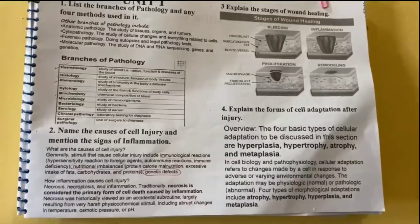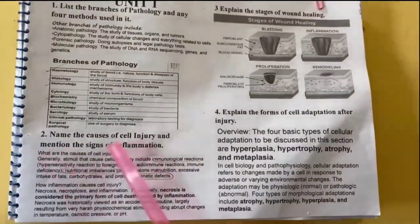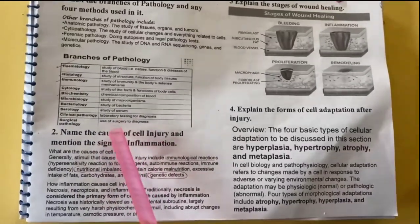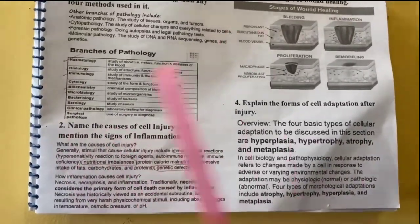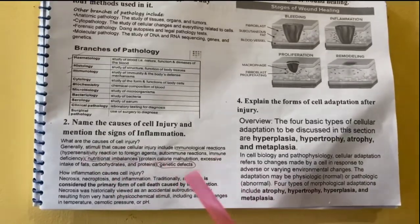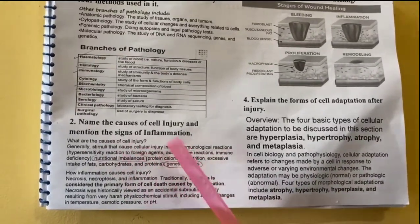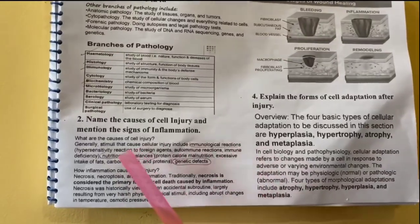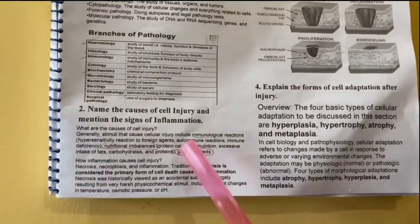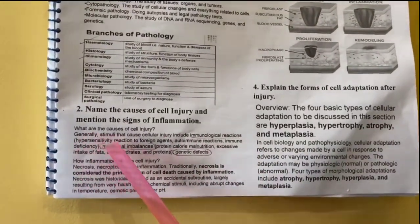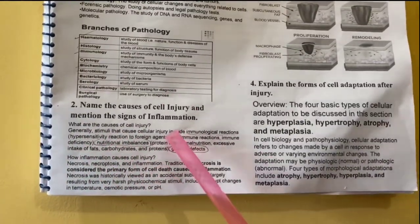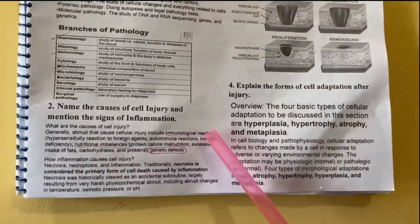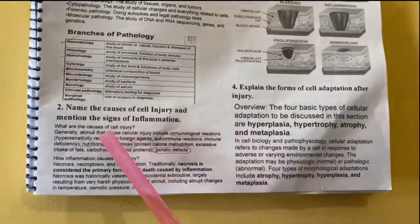Second question is: name the causes of cell injury and mention the signs of inflammation. What are the causes of cell injury? First is immunological reactions. Allergic reactions will come under immunology, for example hypersensitivity reactions, then autoimmune reactions, immune deficiency — all of these are immunological reactions and are one cause of cell injury.